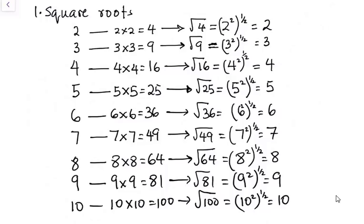So let's take 2. If we multiply 2 by 2, it's going to give us 4. If we take the square root of 4, the square root of 4 is going to be 2. We apply the same case in 3, in 4, 5, up to 10.